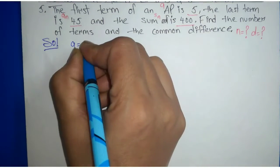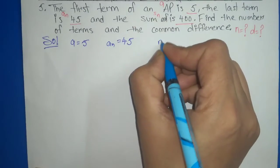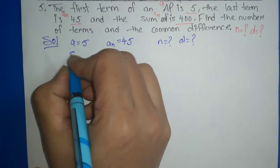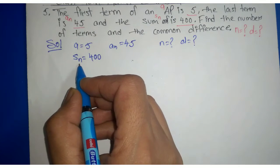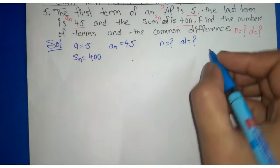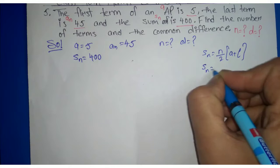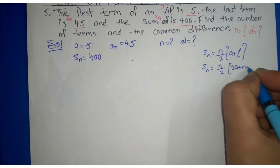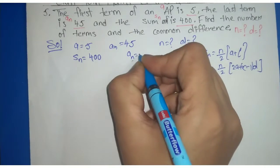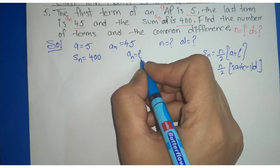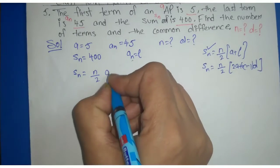इसमें हमें first term given है 5, and nth term given है 45। हमें find out करना है N and common difference, and sum given है 400। SN find out करने के two formulas हैं: first is N upon 2 into (A plus L), and second is N upon 2 into (2A plus N minus 1 into D)। यहाँ nth term given है 45, और nth term को हम L भी कह सकते हैं, तो हम formula number 1 use करेंगे: SN equal to N upon 2 into (A plus L)।